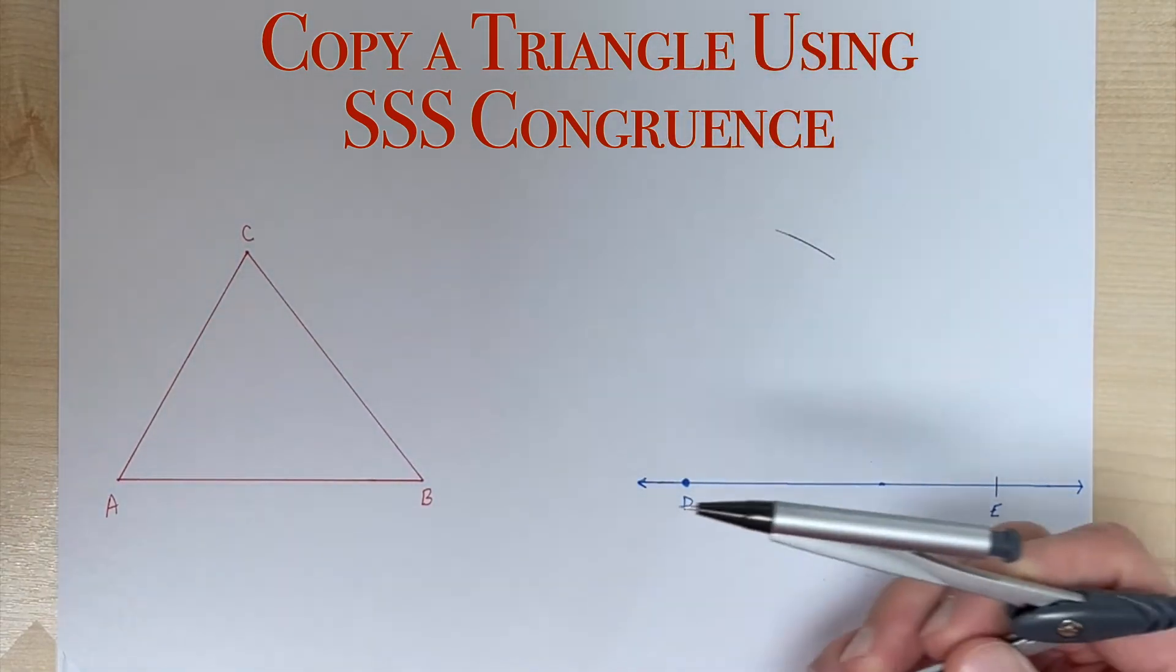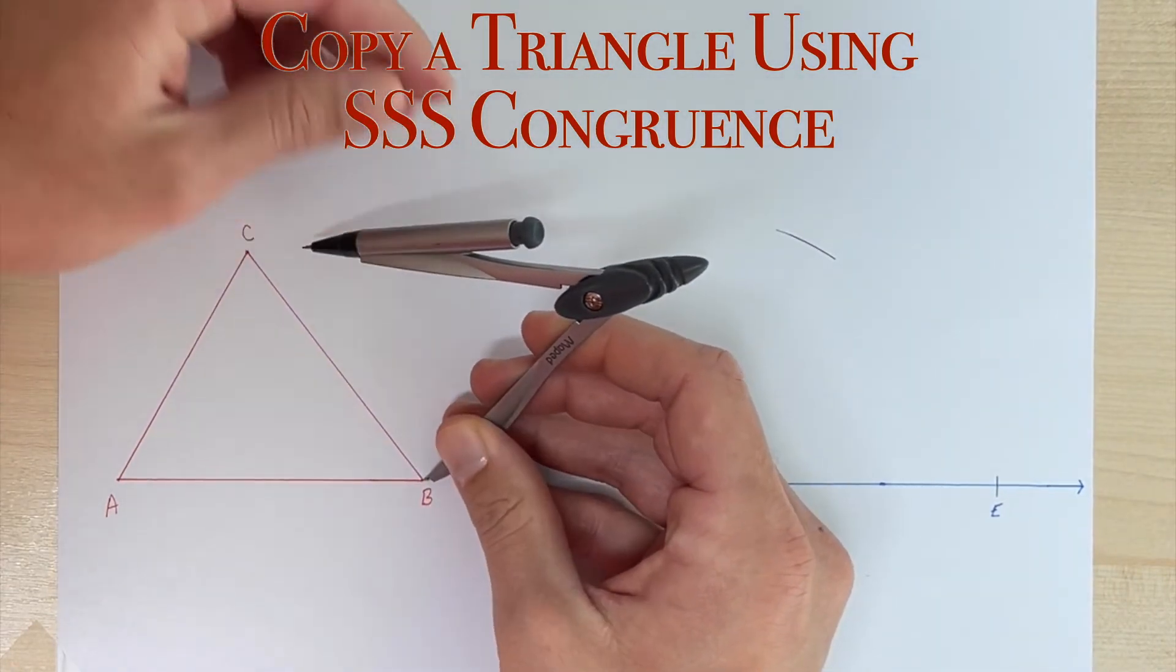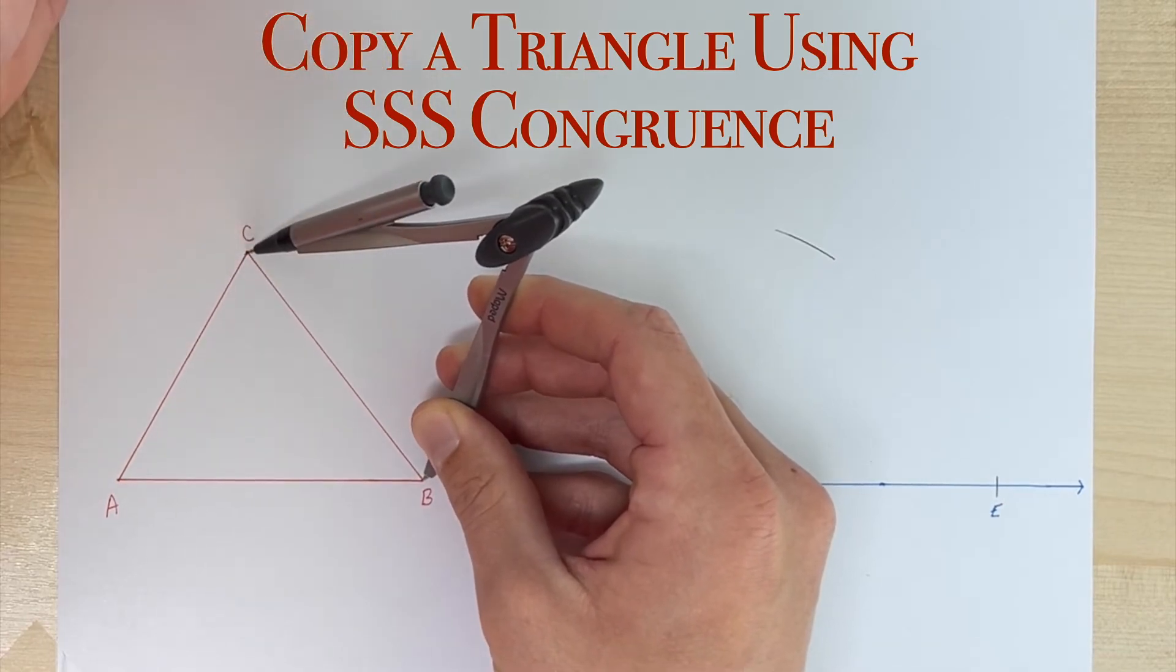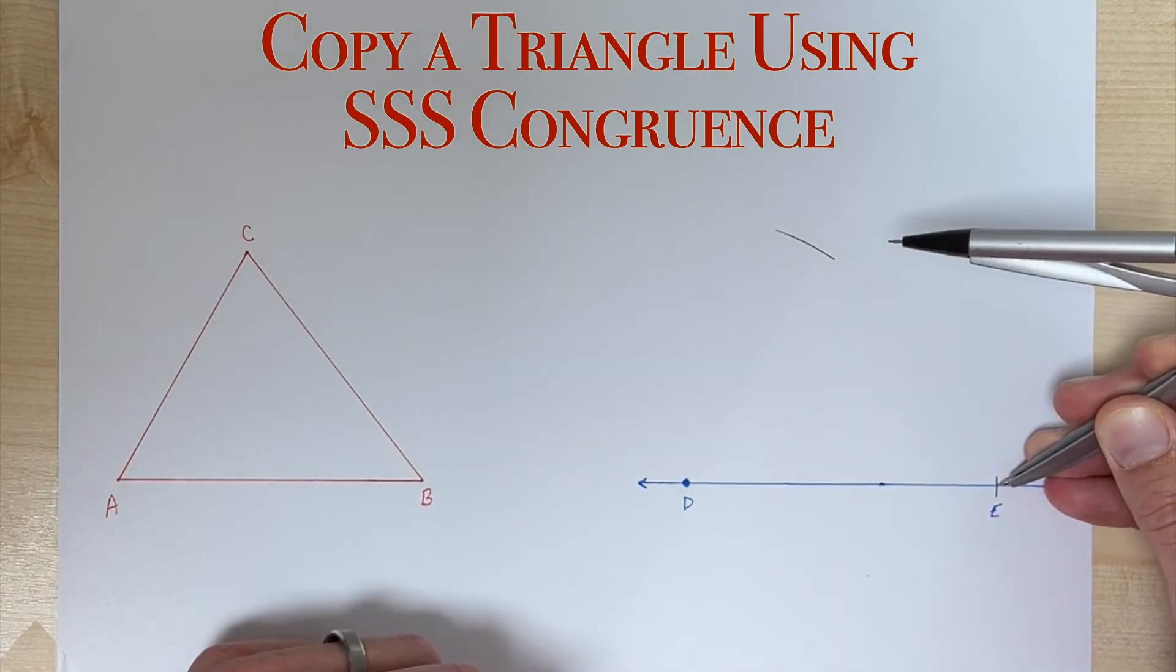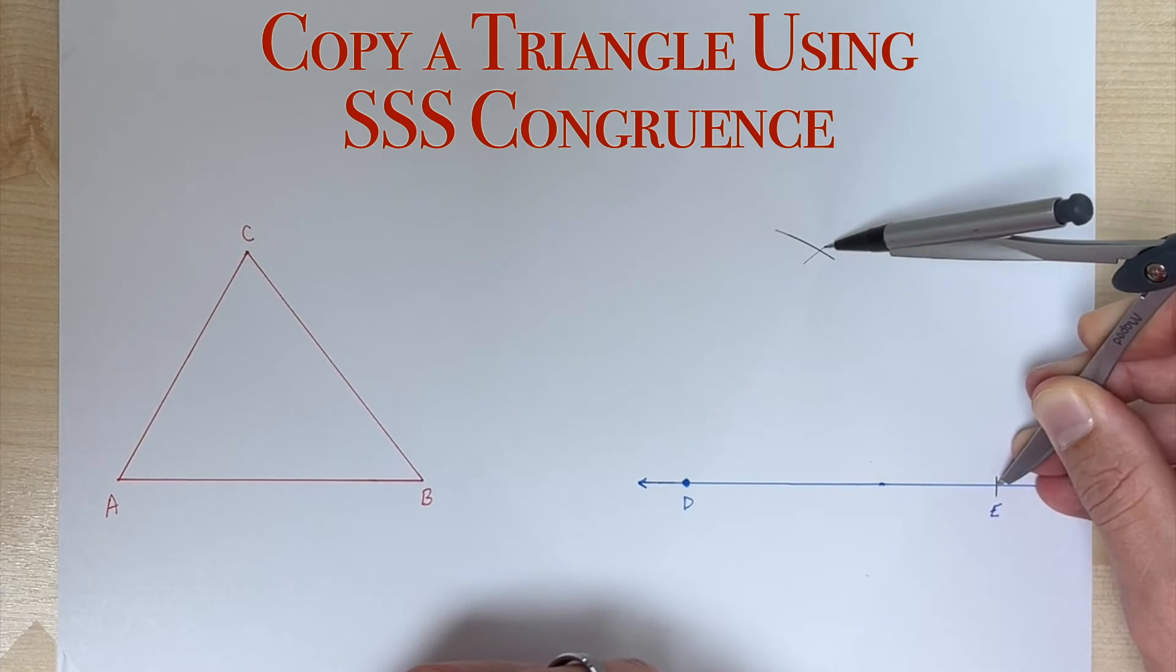All right, now the last side. Let's put our needle on vertex B. We're going to open it a little bit wider so that the pencil part is on vertex C. Now let's take this over, we're going to put our needle on E that we have created and we're going to draw an arc up here at the top.